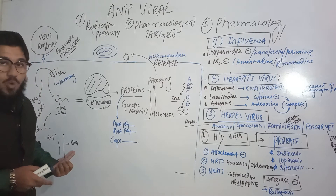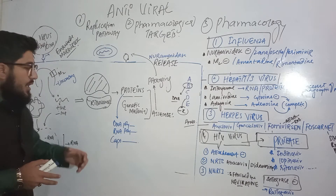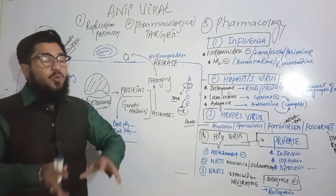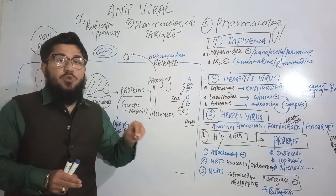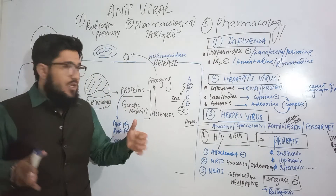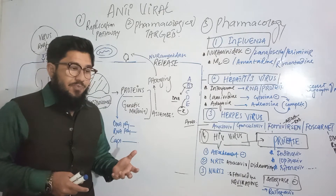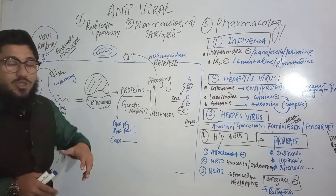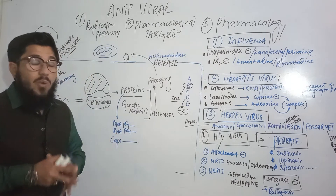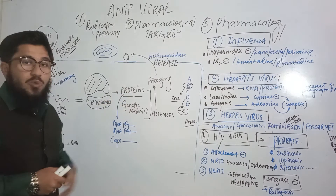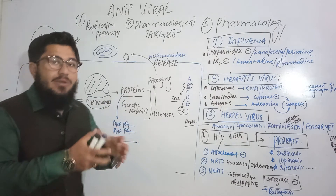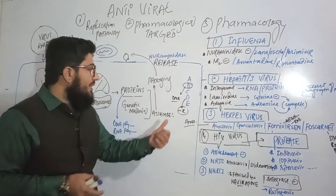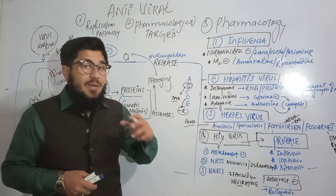The messenger RNA produced from the fused DNA carries the message for viral proteins. At the ribosomes, it is translated into all the proteins required by the herpes virus — including DNA polymerases and RNA polymerases, which help synthesize the viral RNA and DNA. Once these proteins and the genetic material are synthesized, they assemble together.